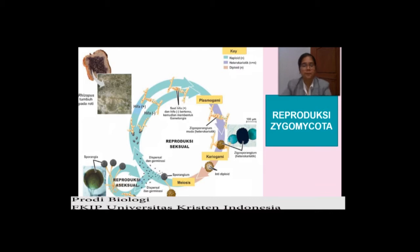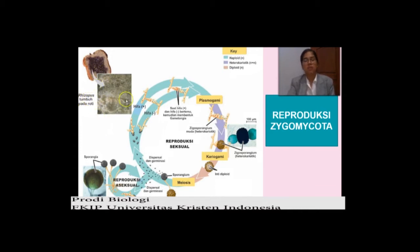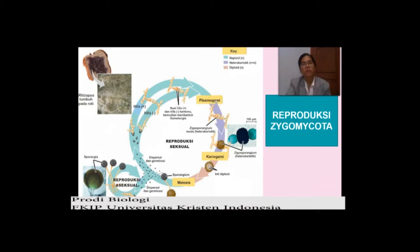Yang pertama, untuk reproduksi Zygomycota — contohnya di sini adalah Rhizopus pada roti. Roti tawar yang dihinggapi atau ditumbuhi oleh jamur Rhizopus. Bagaimana reproduksinya? Awalnya dari hifa yang positif dan hifa yang negatif. Hifa positif dan negatif ini akan bertemu dan membentuk gametangium. Gametangiumnya ini akan mengalami plasmogami — plasmogami adalah peleburan plasma — membentuk empat inti. Jadi yang tadinya haploid-haploid menjadi empat intinya.